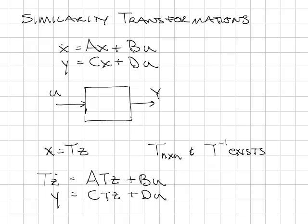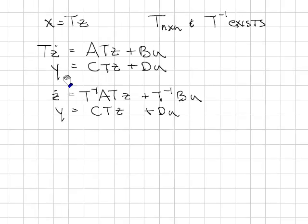Now solve for Z dot, and we're left with the equation here. Z dot equals T inverse AT times Z plus T inverse B times U. Y is equal to CT plus DU.